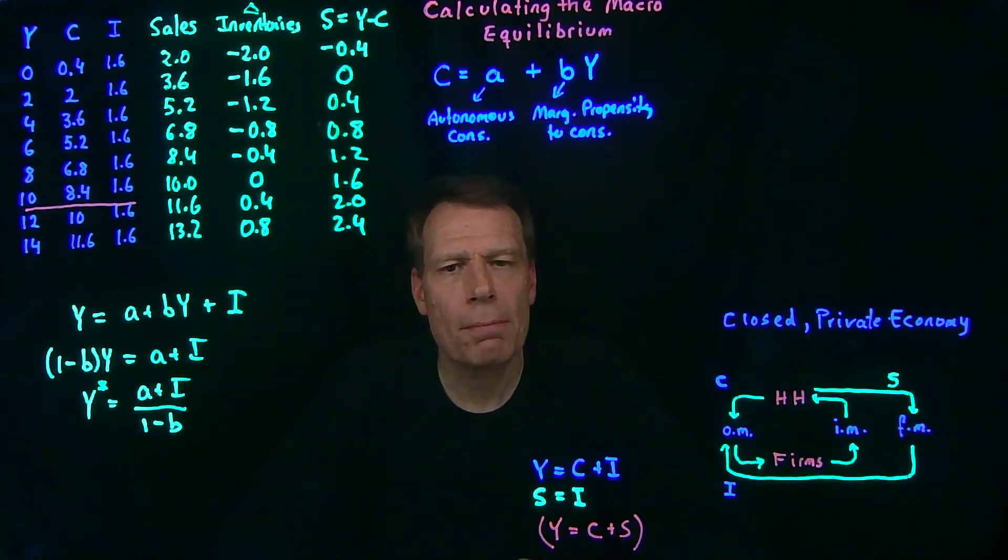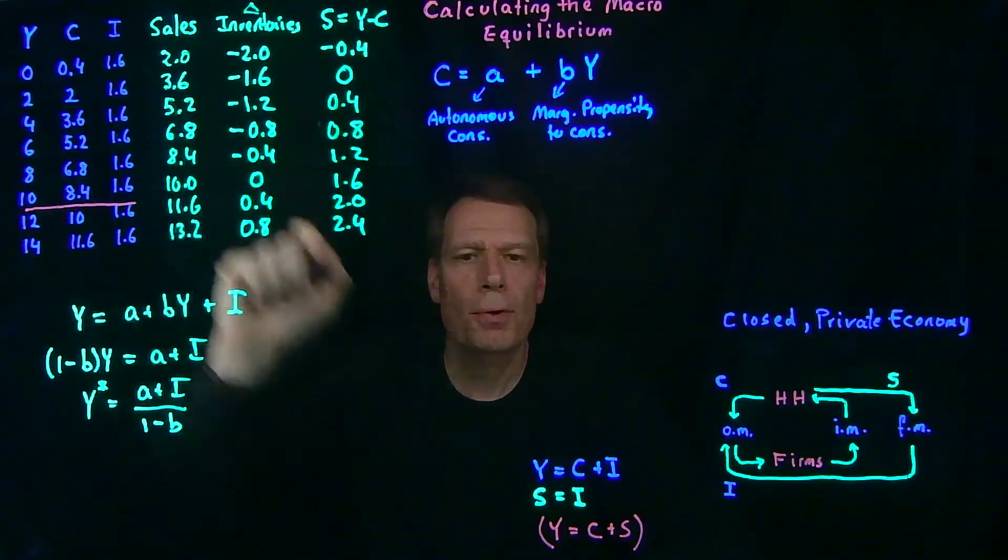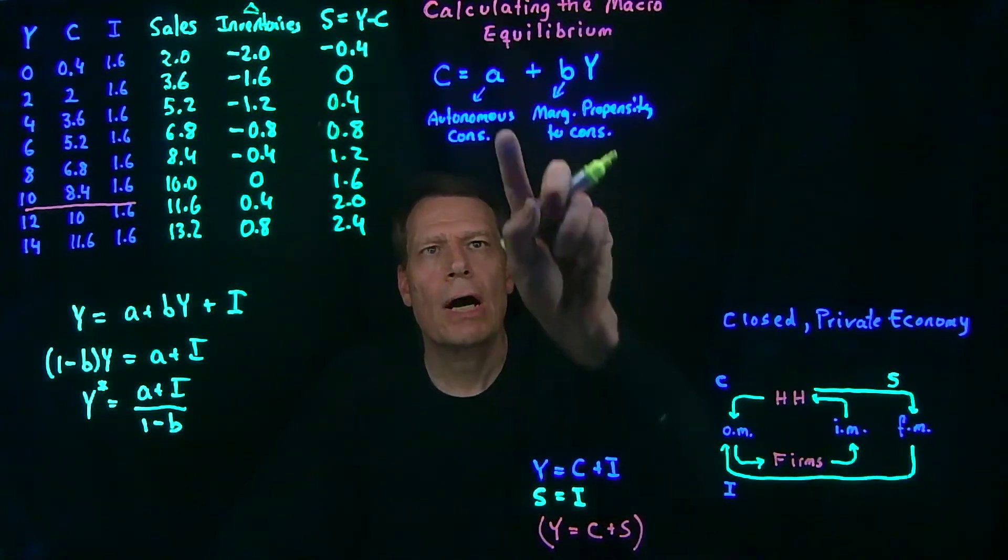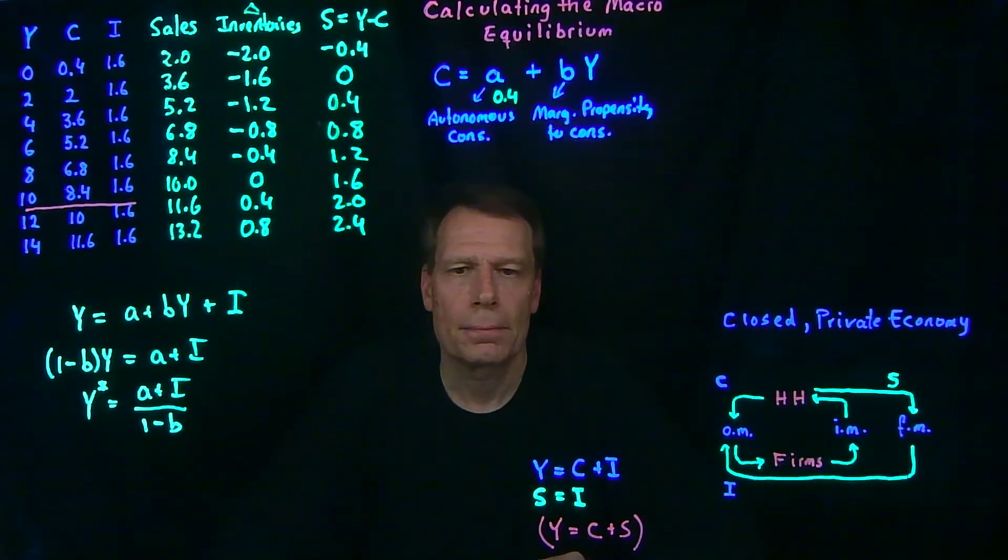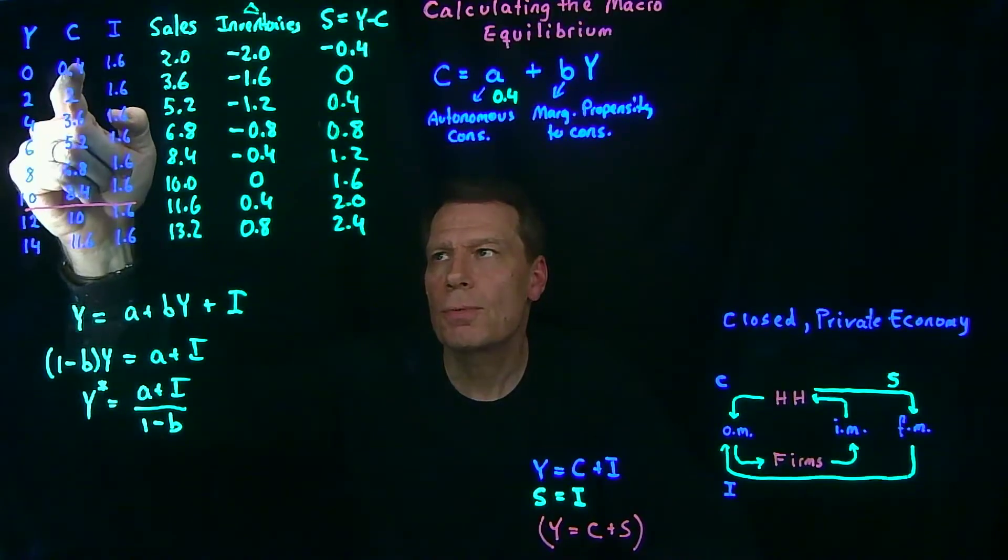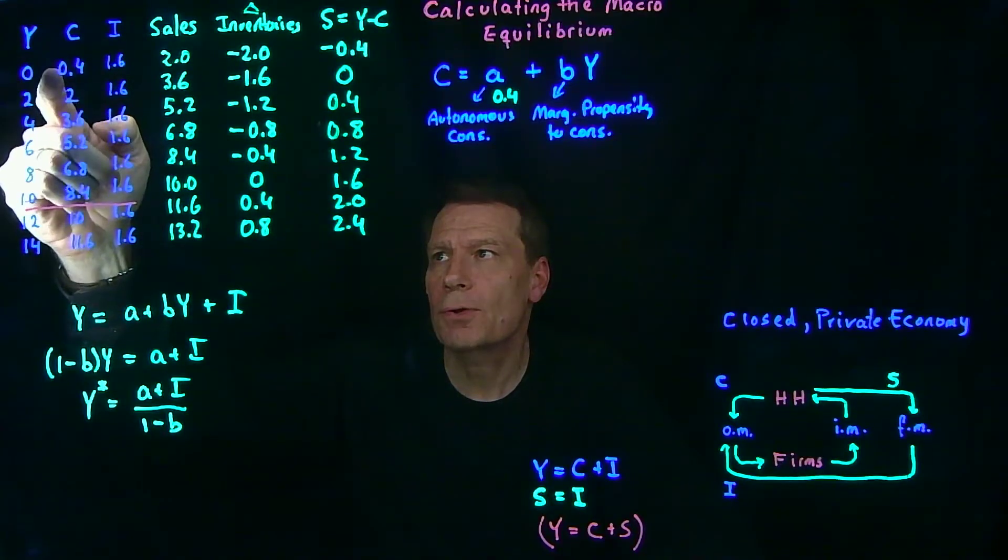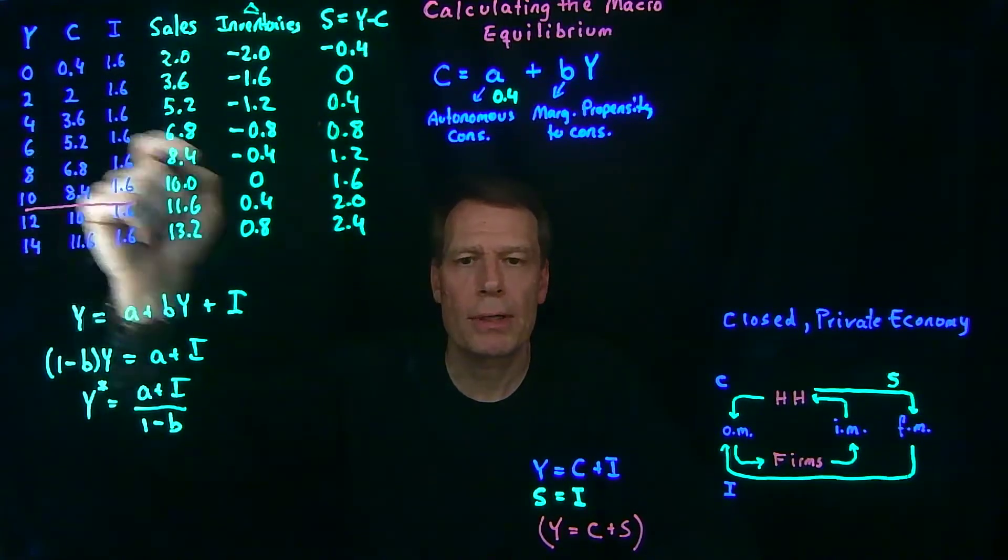Now let's add some numbers to this to match it with the table. In the table, we've assumed that consumers are going to consume 0.4 billion even if there's no income. So our A in the table is 0.4. We also assumed that as income goes up, consumers are going to consume some fraction of that income. When income goes from 0 to 2, they're going to increase their consumption by 1.6.